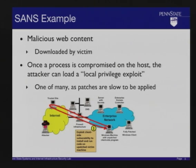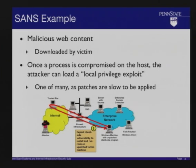Attacking an unprivileged process doesn't get the attacker as far as attacking a root process connected to the network. Attackers have beaten root processes pretty much to death, and we've improved defense there. Now there's this other attack vector through unprivileged processes. Once the attacker compromises these processes, they can launch what SANS calls a local exploit. There are many ways the attacker can knock over your system once they get hold of even an unprivileged process — they can use local exploits to compromise other root processes and take control.